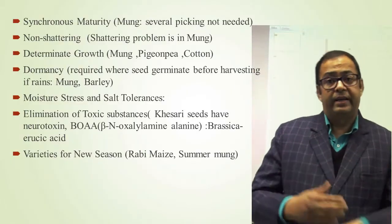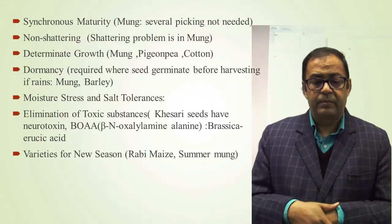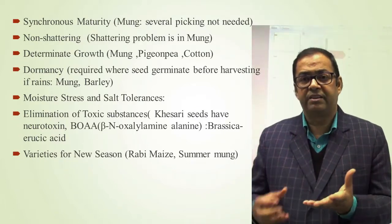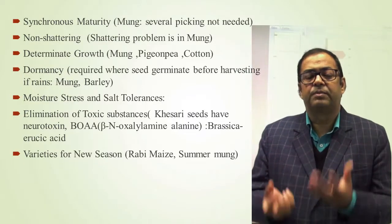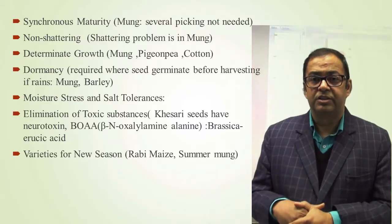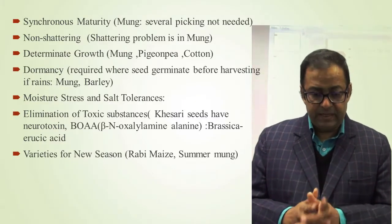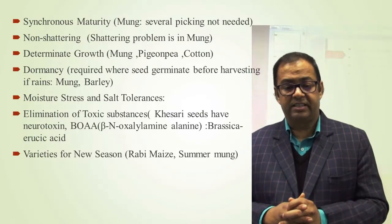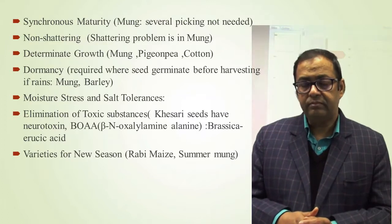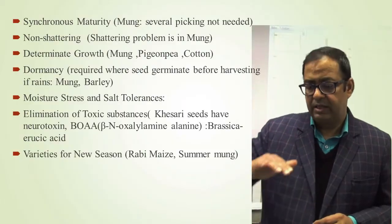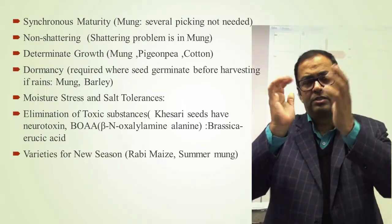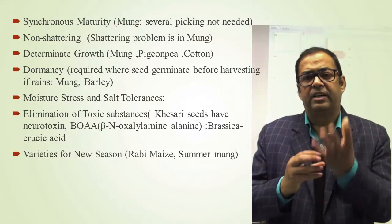Non-shattering is another objective. The shattering problem occurs with mung — before harvest, if rain comes, it germinates on the plant and there is a loss. So non-shattering type is desirable and breeders must develop non-shattering varieties. Determinate growth is the next objective — in mung, pigeon pea and cotton. Determinate types mean they attain maturity all at one time, while indeterminate types continue flowering and fruiting with acropetal succession.